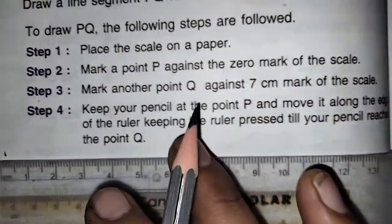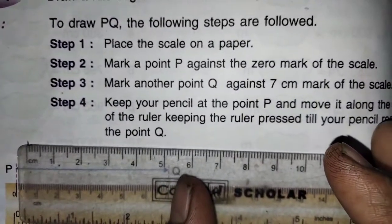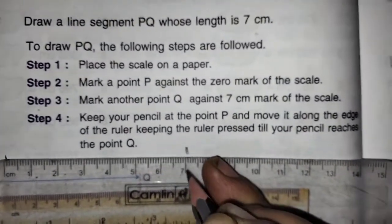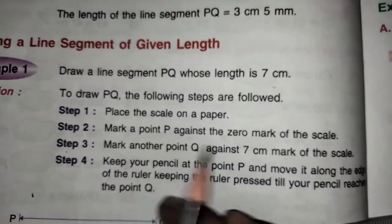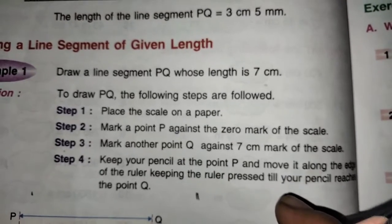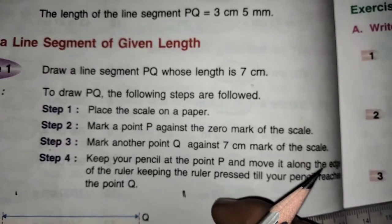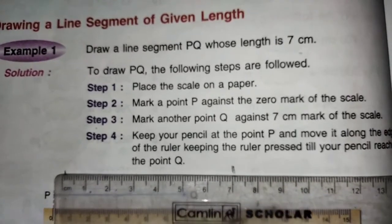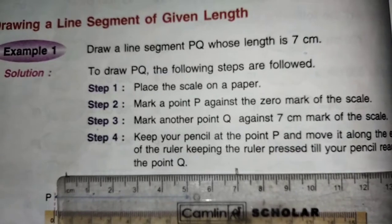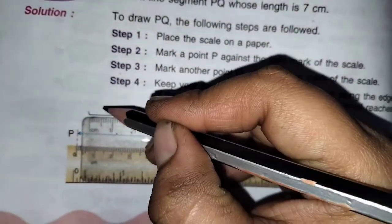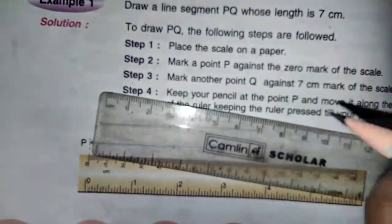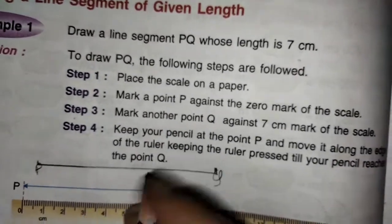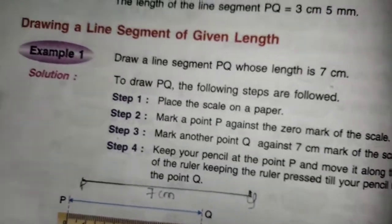Next, mark the other end against 7. Now here, 0, now here it is 7. You have to mark like this way. Keep your pencil at the point P to move it along the ruler, keeping the ruler pressed till your pencil reaches the point Q. You have to draw the line like this way children. This is point P, this is Q. They told to draw the line from here to here, like this way you have to pull till here. This is known as 7 cm. PQ is equal to 7 cm.